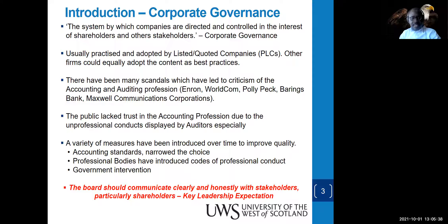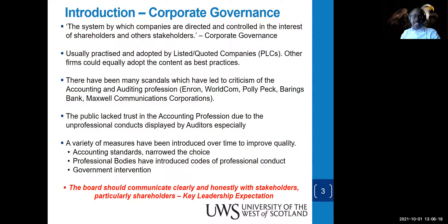The public lost trust in the accounting profession because accountants and auditors were found to be undertaking unethical activities. So a variety of measures were put in place to improve quality: accounting standards narrowed the choices available; professional bodies introduced codes of conduct to govern activities; and government intervention followed. It is always key that the board should communicate clearly with all stakeholders.